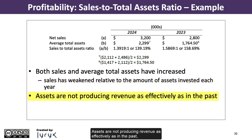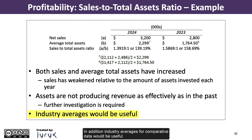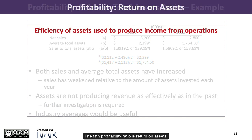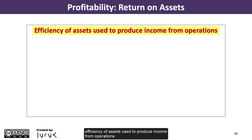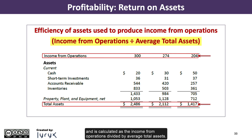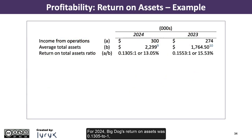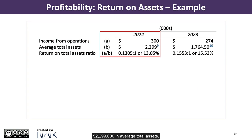Assets are not producing revenue as effectively as in the past, so further investigation is required. In addition, industry averages for comparative data would be useful. The fifth profitability ratio is return on assets, commonly known as ROA, which measures the efficiency of assets used to produce income from operations and is calculated as income from operations divided by average total assets. For 2024, Big Dog's return on assets was 0.1305 to 1, or 13.05%, calculated as $300,000 in operating income divided by $2,299,000 in average total assets.